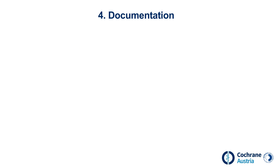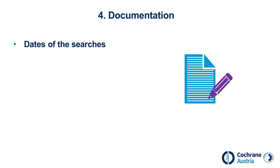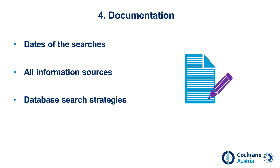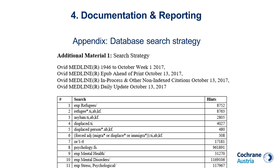In order for the search process to be comprehensible to others, it is important to document all search steps precisely. The following information has to be documented: the date or dates of the searches, all information sources used, and the exact database search strategies. This information also needs to be reported in a systematic review. The methods section includes a summary of the search process, and at least one database search strategy is presented in the appendix.